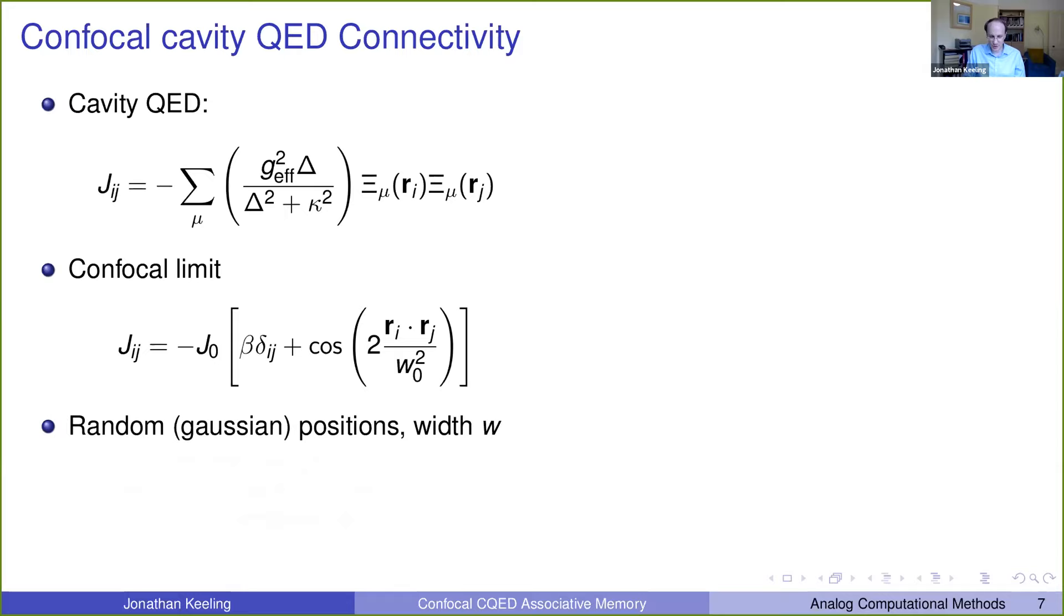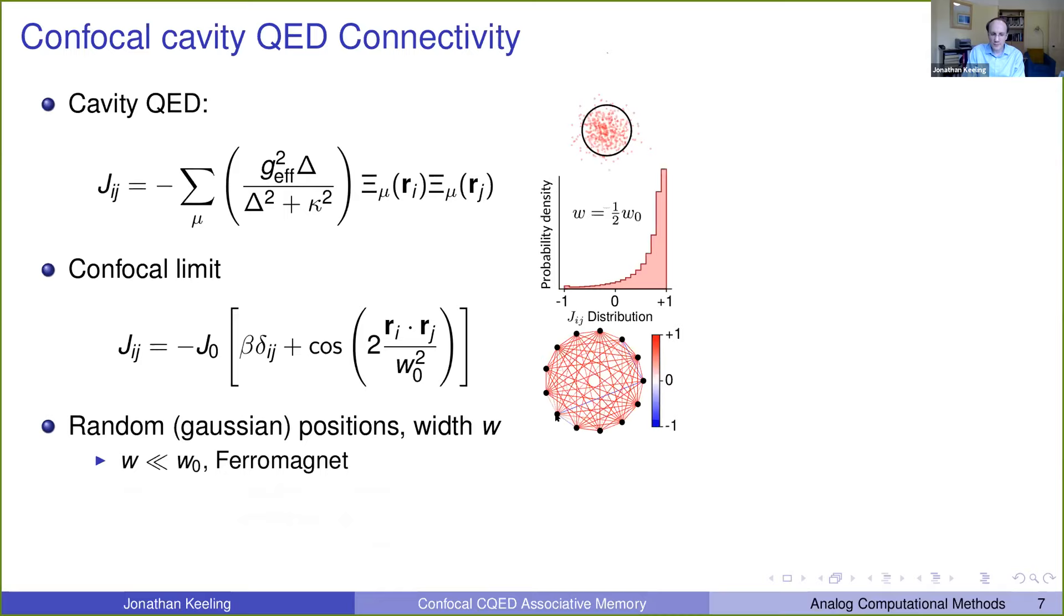What we will do is put the atoms in at random positions and then find what properties the Jij matrix has from that. So if the atom or clump positions are all distributed in a small variance distribution, so if this width of this Gaussian distribution for where the clumps are, if that width is much smaller than W naught, which is the beam waist, then you get a basic ferromagnet. Now as I've drawn here for W naught over two, there's actually some probability that some of the links are negative, which are drawn in blue on this picture at the bottom, but still this basically is a ferromagnet because there's very few frustrated links, everything will just line up.